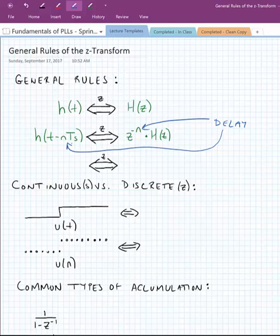Finally, we have a unit delay. Our unit delay in the time domain looks like e to the minus j omega t_sub_s. And in the z-domain is just simply z to the minus 1.